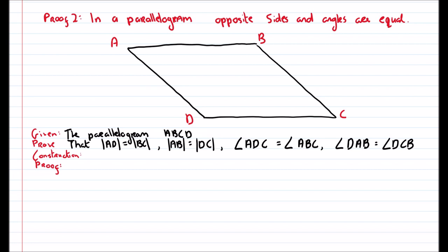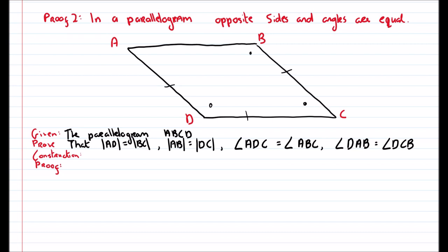Ok, so the second proof is: in a parallelogram, opposite sides and opposite angles are equal. So I want to prove that this line equals this line, this line equals this line, this angle equals this angle, and this angle equals this angle. Again, we'd be given the headings: given, to prove, construction, and proof.